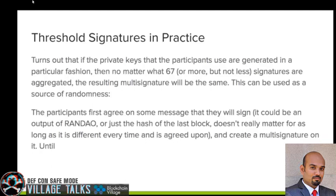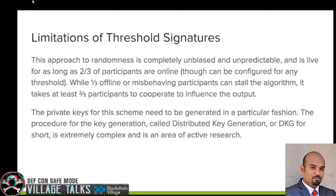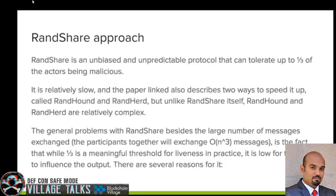The BLS threshold signature approach is unbiased, unpredictable, and live as long as two-thirds of participants are online. However, one-third of offline or misbehaving participants can stall the algorithm, and at least two-thirds must cooperate to influence the output — a big overhead for a live blockchain system. The private keys must be aggregated via distributed key generation, which remains an ongoing area of research.